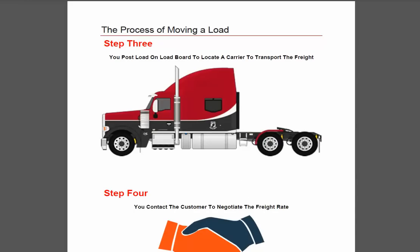You want to go and put the load on a load board, such as Internet Truck Stop or DAT. You'll post all the load particulars and details on there, such as what type of equipment, the days it's picking up, where it's picking up at, and where it's going to. Once you've posted the load on the load board, you're going to start contacting carriers to offer them the freight. If your customer has given you a pre-assigned rate that he is trying to meet, you'll know exactly what to start offering these carriers, because you can't give them all the money — you have to make money yourself — so you will take your percentage off of that load amount and start searching for a carrier offering him that price.